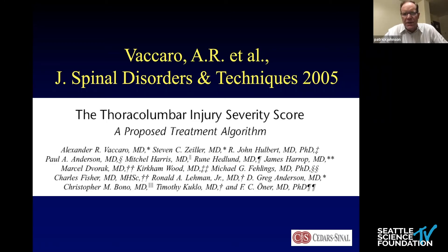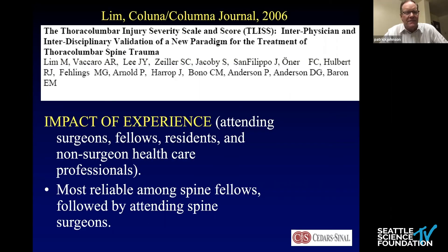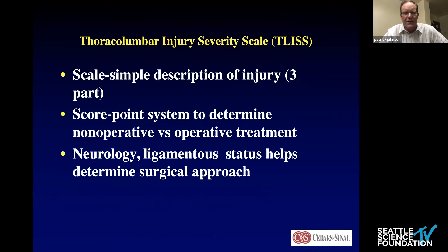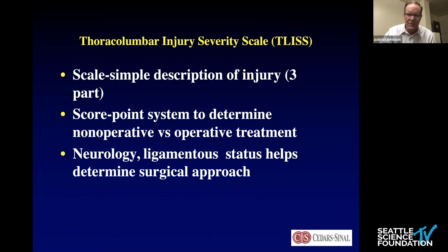Alex Vaccaro has really been the key figure in pushing forward the study of spine fractures through the spine trauma study groups he assembled. These groups evaluated thoracolumbar injuries using a checklist evaluation and all the different factors that go into assessment, creating a scale that is simple, descriptive of injury, and boils down to three parts: a scoring system, an assessment of neurology, and assessment of ligamentous status — helping determine surgical approaches.